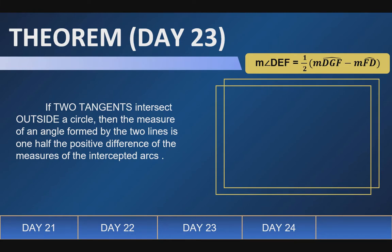So, paano naman kapag dalawang tangent? So, if two tangents intersect outside the circle, then the measure of an angle formed by the two lines is one half the positive difference of the measure of intercepted arcs. So, same lang din. Kakalahatiin lang natin yung difference ng dalawang intercepted arc. Pero dito, kung mapapansin natin, ang difference na ito, ang buong circle na yung sakop na yung buong circle. Kasi yung dalawang arc yung kasama.